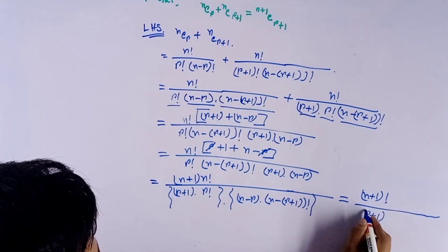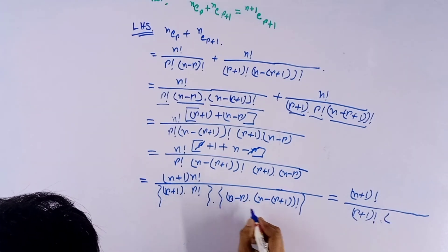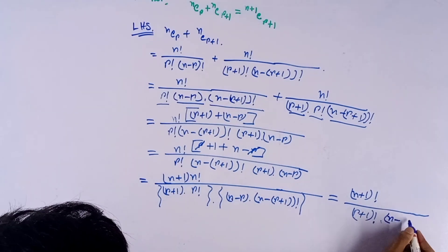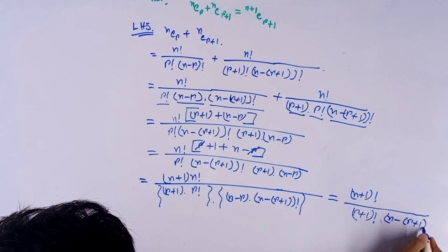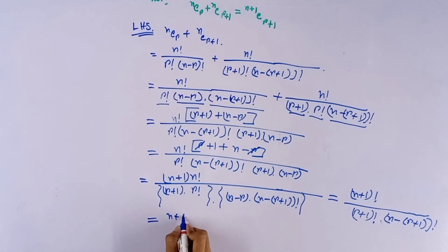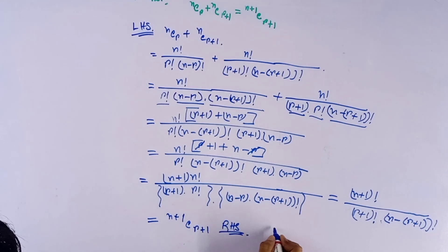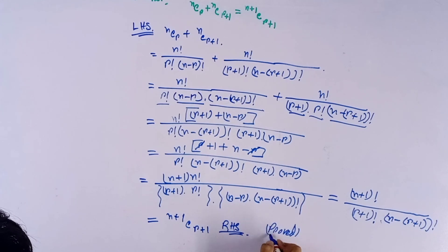This equals (n plus 1) whole factorial by (r plus 1) factorial times (n minus r plus 1) factorial, which equals ⁿ⁺¹Cᵣ₊₁. This is the RHS, and therefore the question is proved.